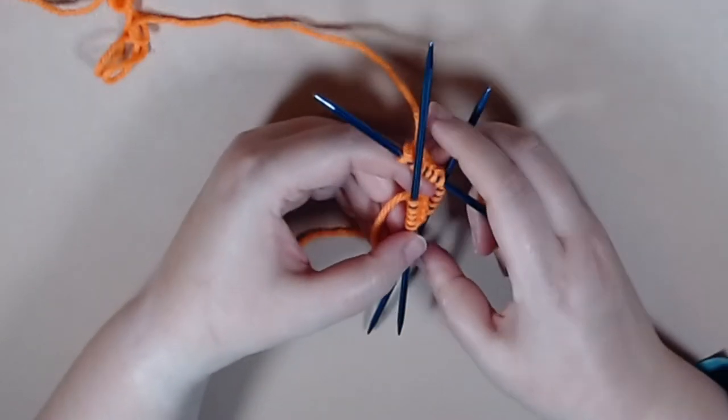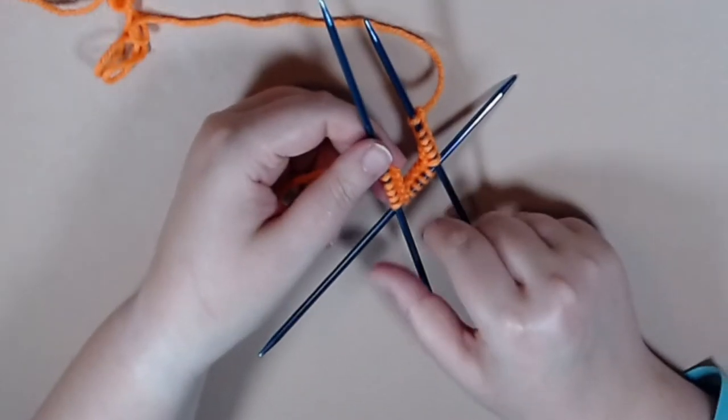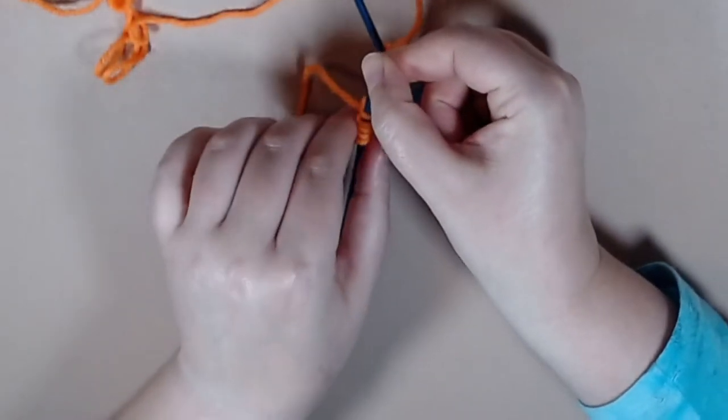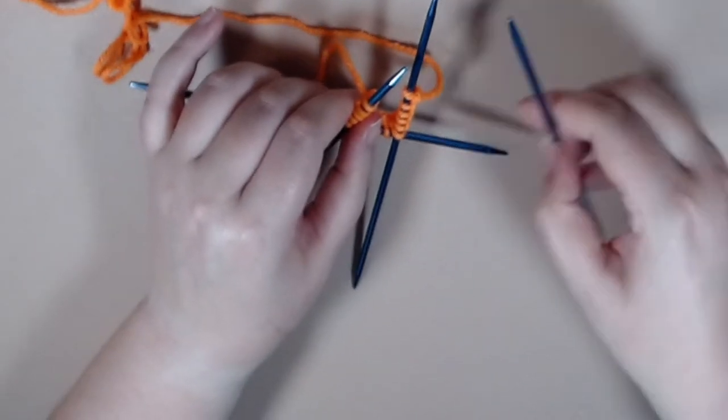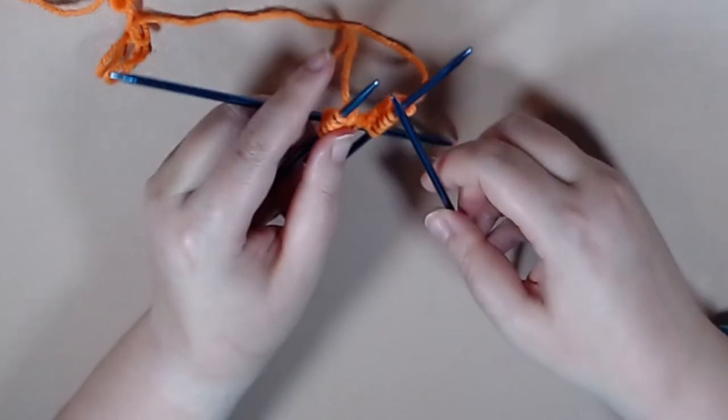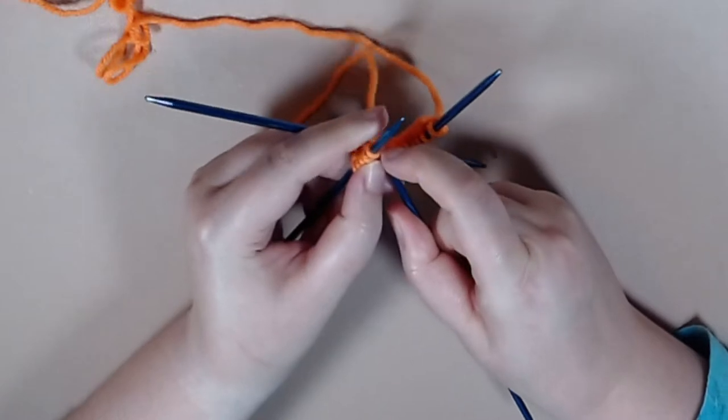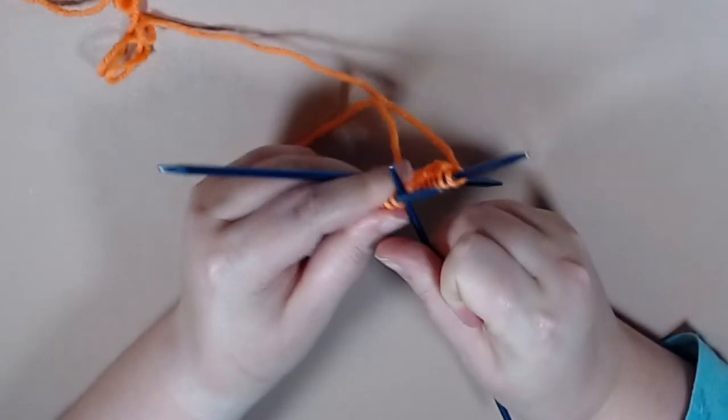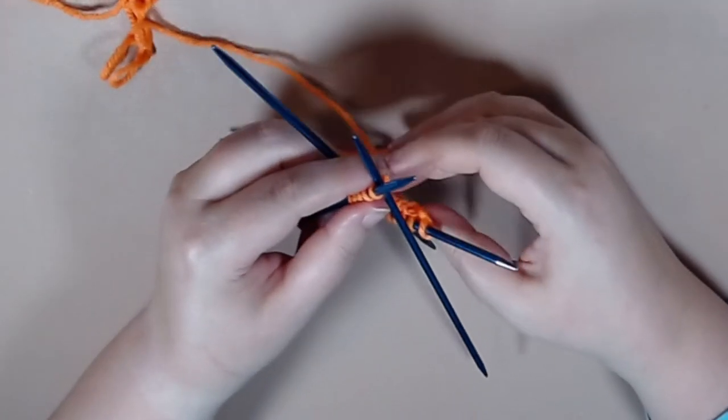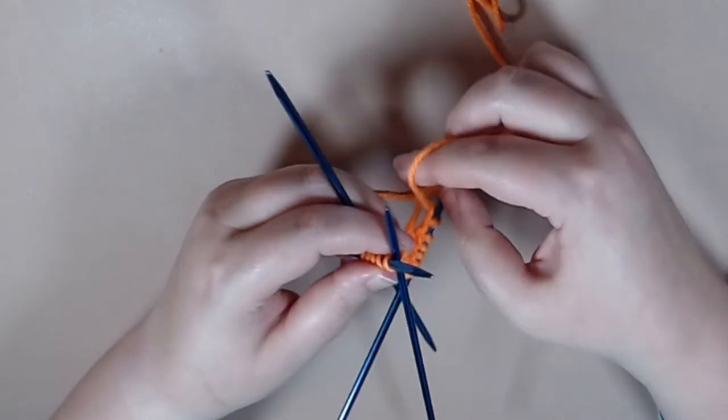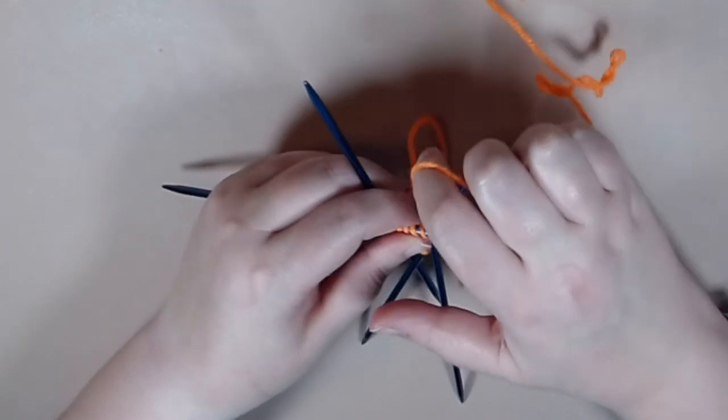So then what we are going to do is we are going to grab our needle and get everything ready to start knitting again. And this is how your work will end up being connected with each other. So we'll go ahead and take our string and we are going to knit those five stitches onto our double pointed needle.